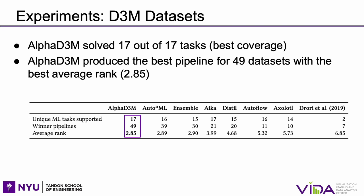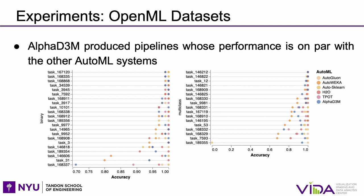Even though AlphaD3M is inspired by prior work, the table clearly shows the difference between them. We compare our system with Auto-WEKA, Auto-sklearn, TPOT, H2O, and AutoGluon. The figure shows the normalized scores, normalized by the best score of all systems. AlphaD3M produces pipelines whose performance is on par with other AutoML systems.